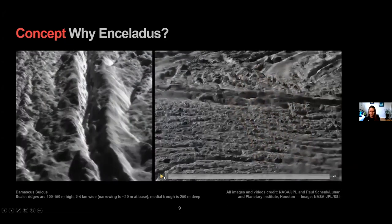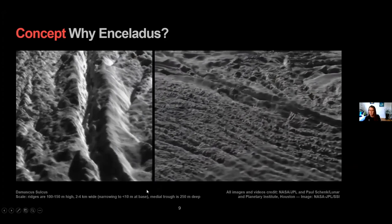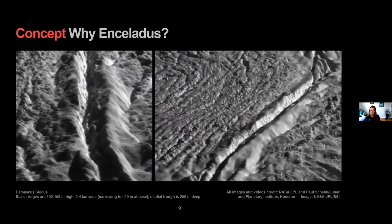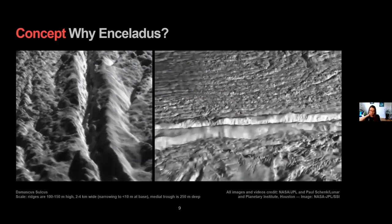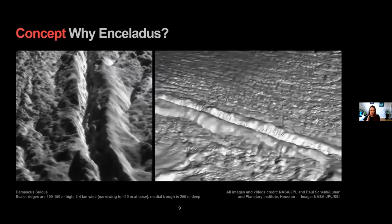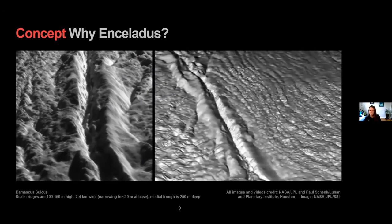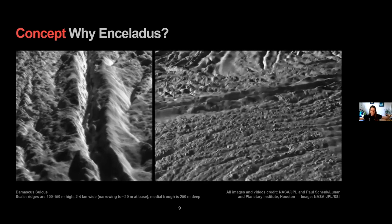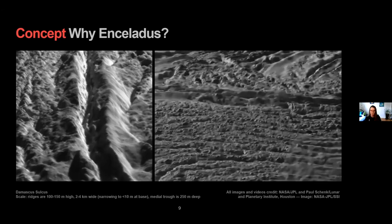The plume is coming out of these four tiger stripes, large cracks or fissures in the South Polar region. These are named after things from the tale of thousand Arabian nights: Baghdad, Damascus, Cairo, and Alexandria. Each has been demonstrated to have activity with both gas and grains. These are hot spots, much warmer than the rest of surface at around 80 Kelvin, reaching as high as 200 Kelvin at the vents.